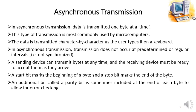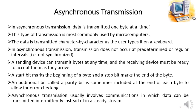Asynchronous transmission usually involves communications in which data can be transmitted intermittently instead of in a steady stream. It is normally used in cases where the time interval between consecutive blocks of data or consecutive bytes are not regular or the same — they are transmitted intermittently and in an irregular manner.